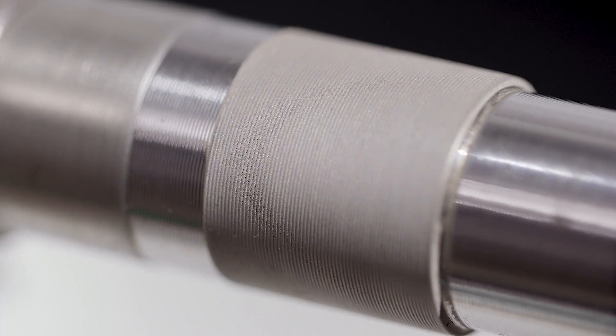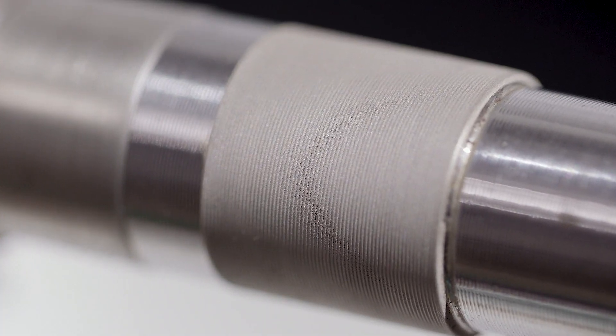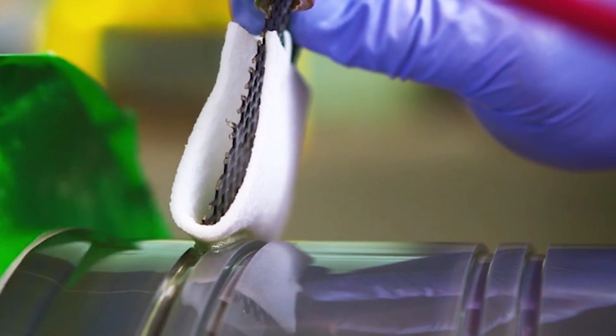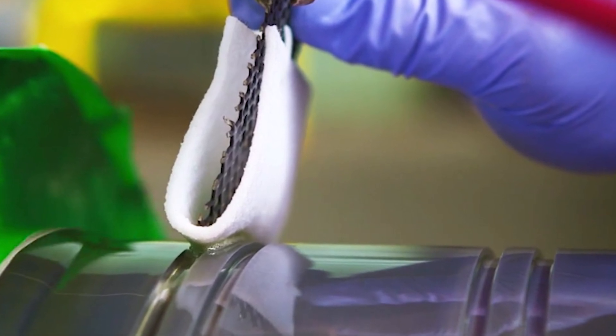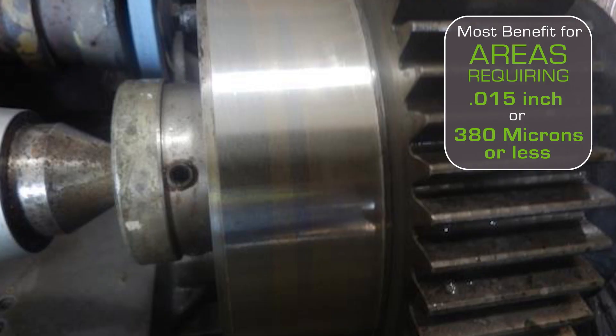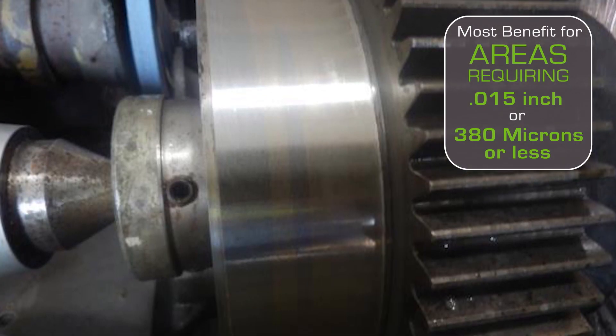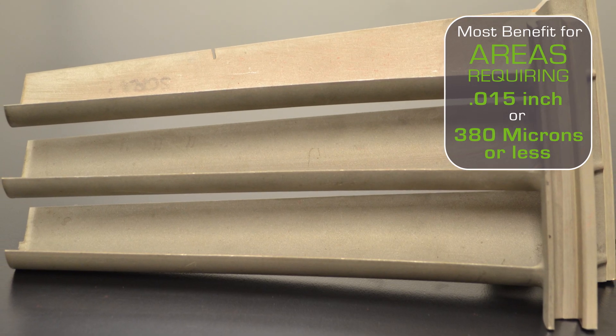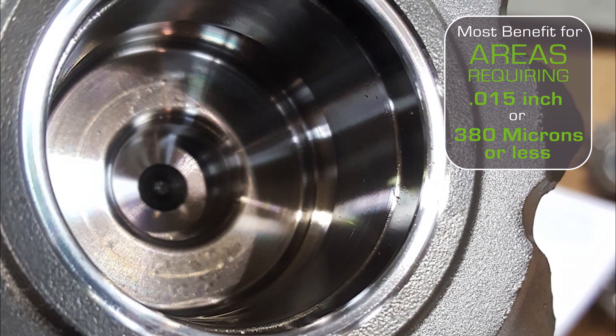Depending on the surface finish and thickness requirements, many areas can be plated to size with little or no need to post-machine. Areas requiring 15 thousandths of an inch or 380 microns or less provide the most benefit because resizing can be accomplished in one layer.